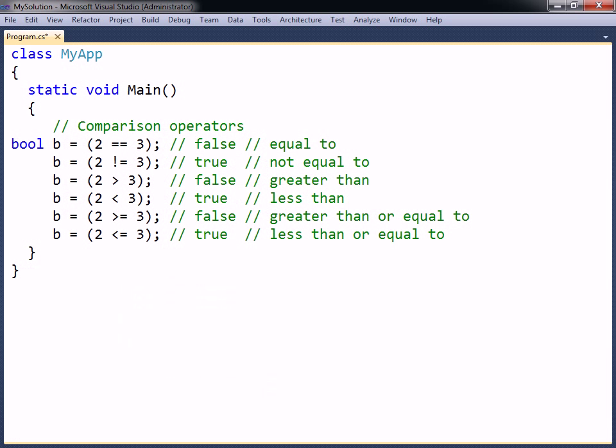The comparison operators compare two values and return either true or false. They are mainly used to specify conditions, which are expressions that evaluate to either true or false.